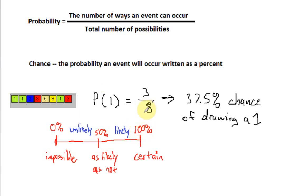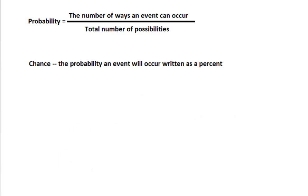So to review: to find the chance of something happening, we first find the probability, and then we turn that into a percent to find the chance. Let's come back with a couple of examples of impossible, unlikely, as likely as not, likely, and certain — and then find the chance of something happening. Let's look at the situation of flipping a coin three times. To do that, we need to know the total number of possibilities, so I'm going to draw a tree diagram.